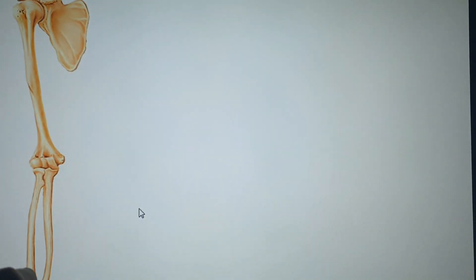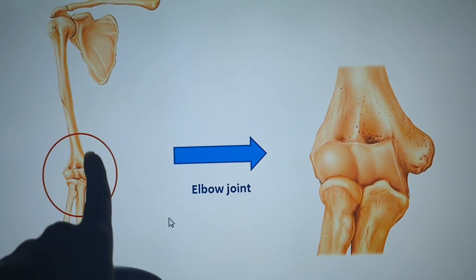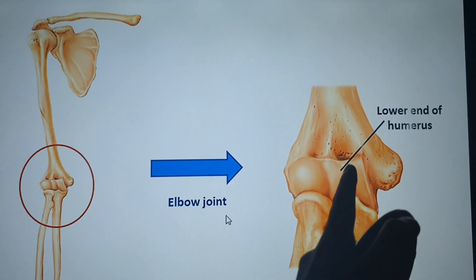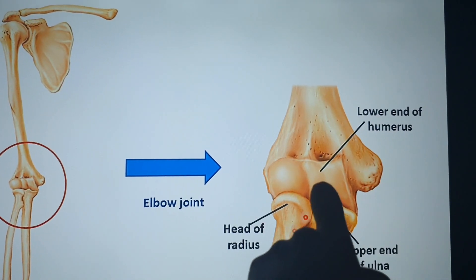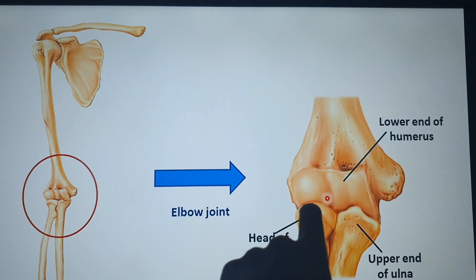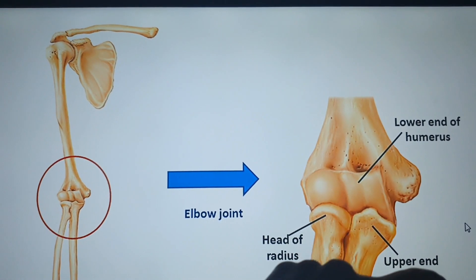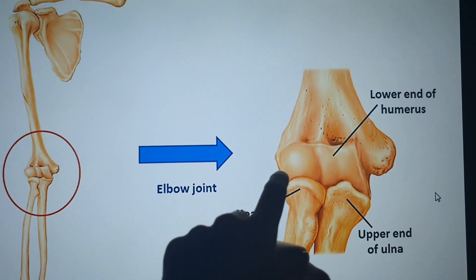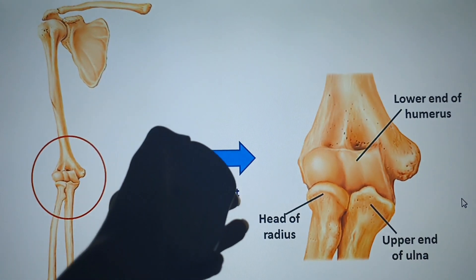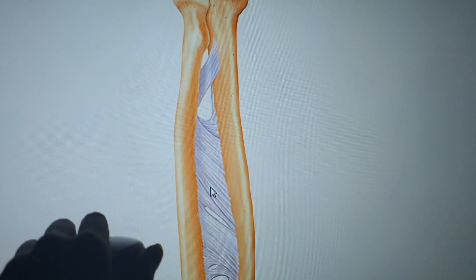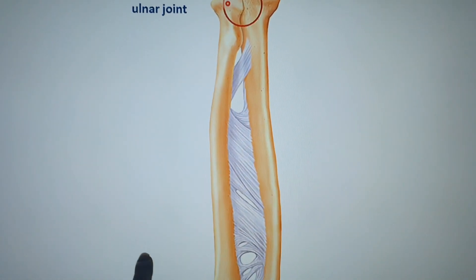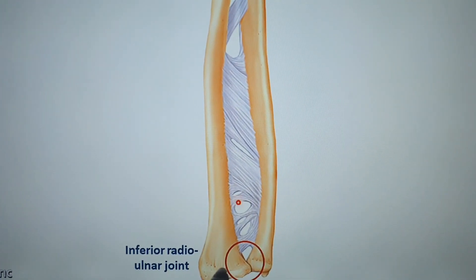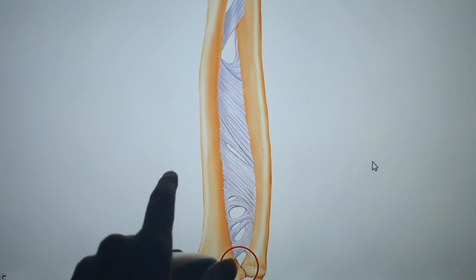Now we're going to take the elbow joint. Here we have the head of the radius and the ulna forming the elbow joint — this is the lower end of the humerus. We also have the superior radio-ulnar joint and the inferior radio-ulnar joint. These two joints allow for pronation and supination.